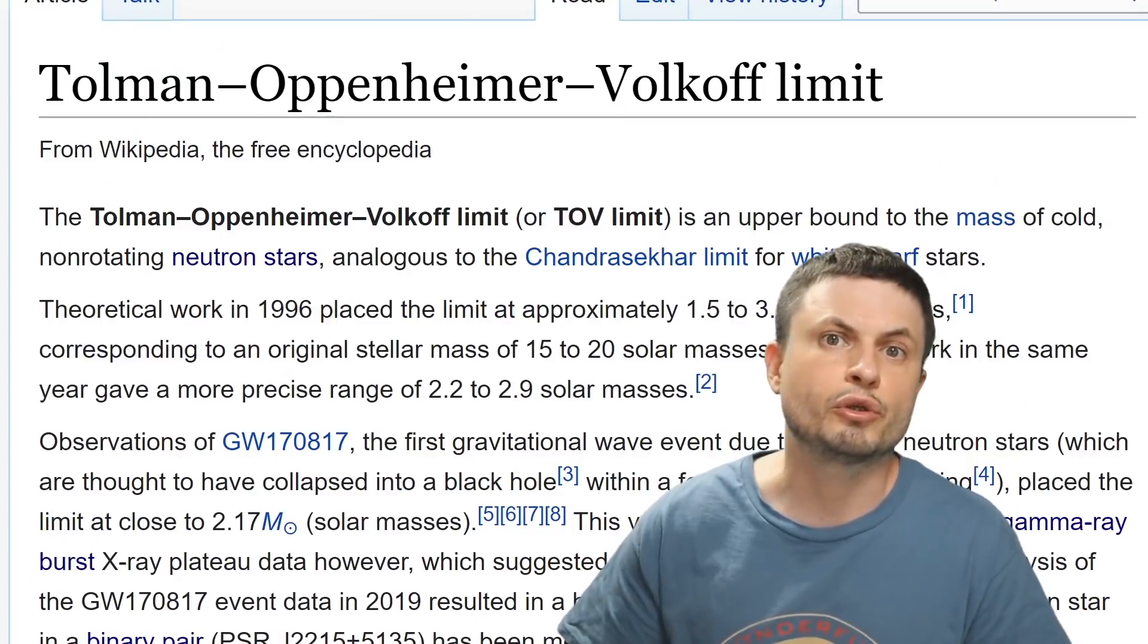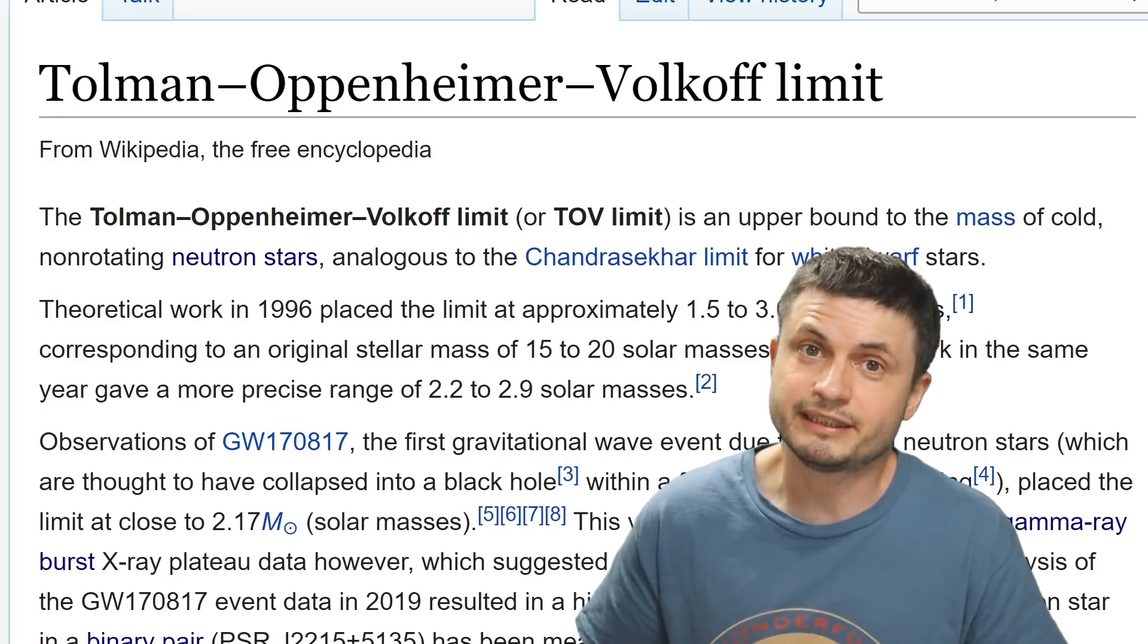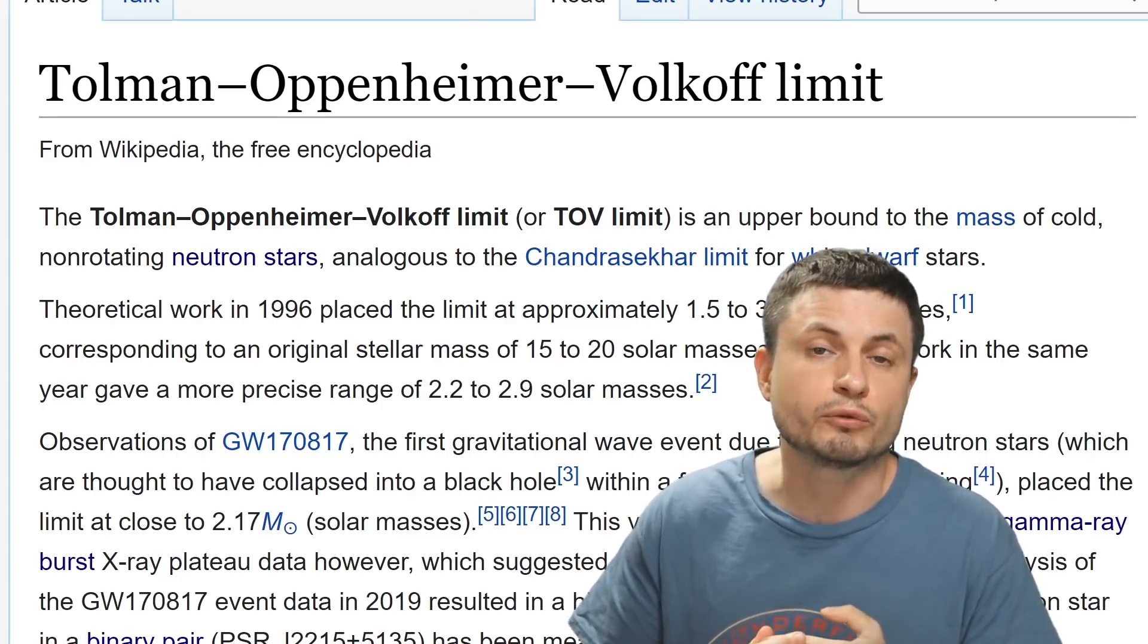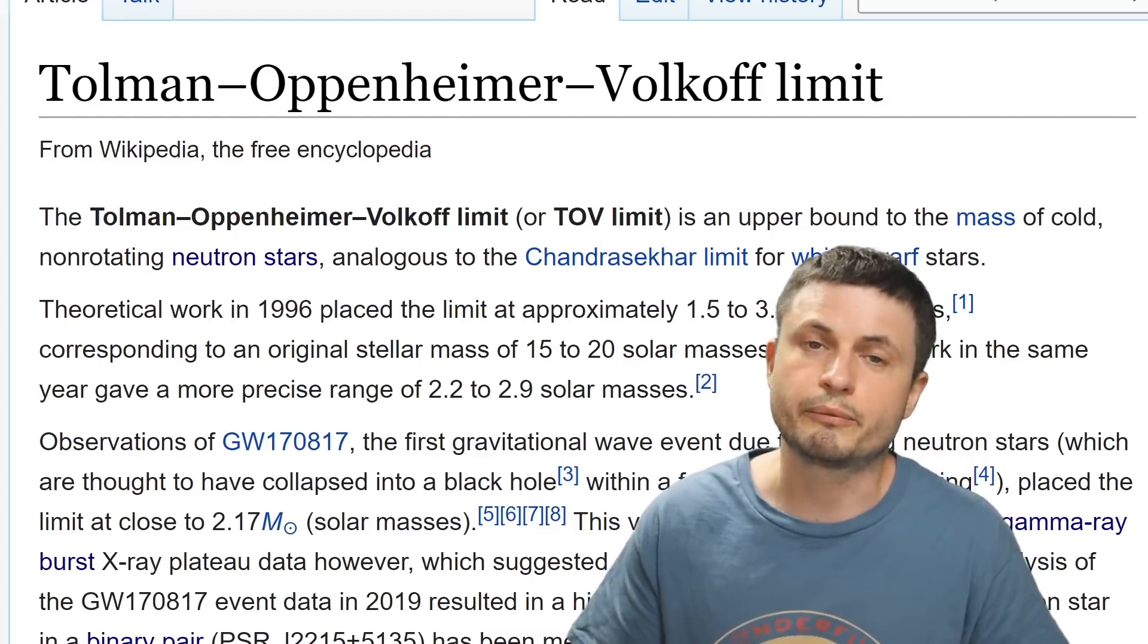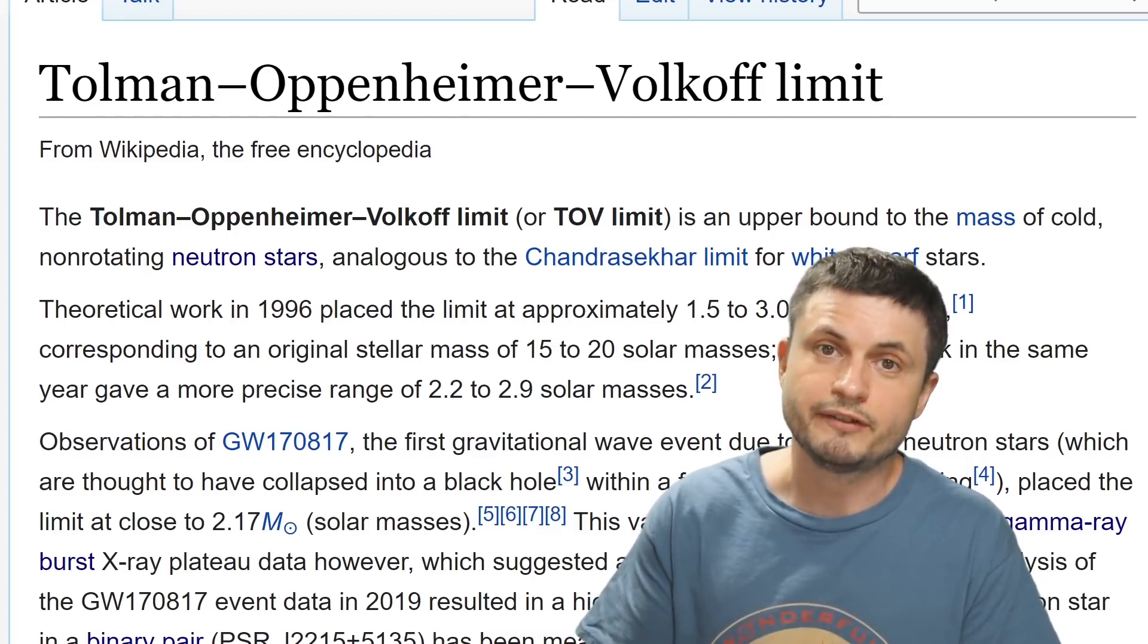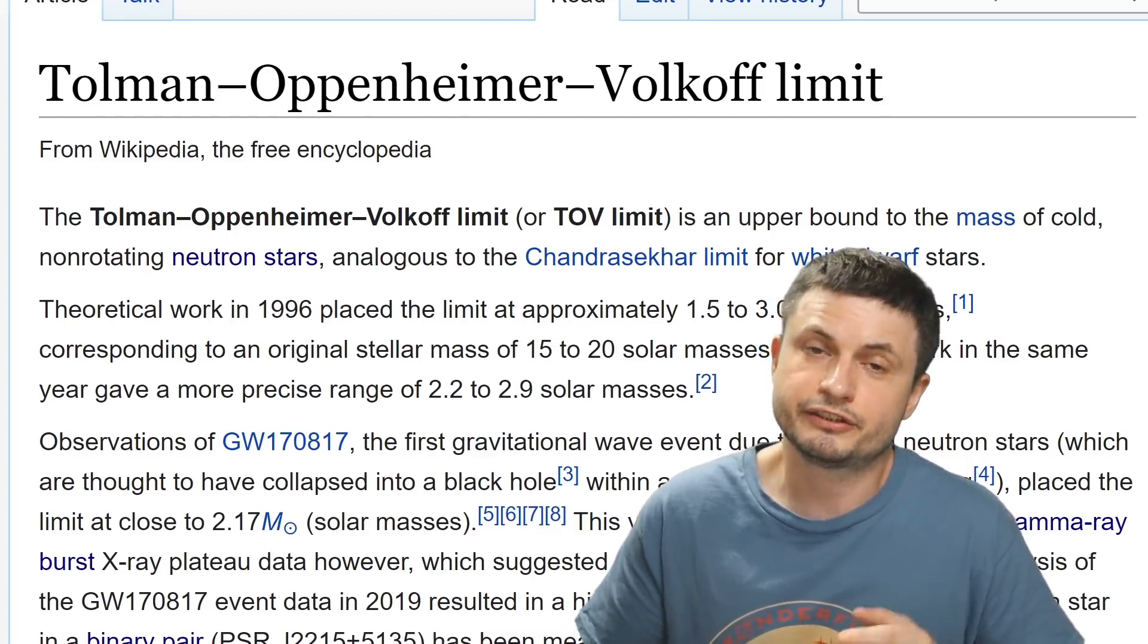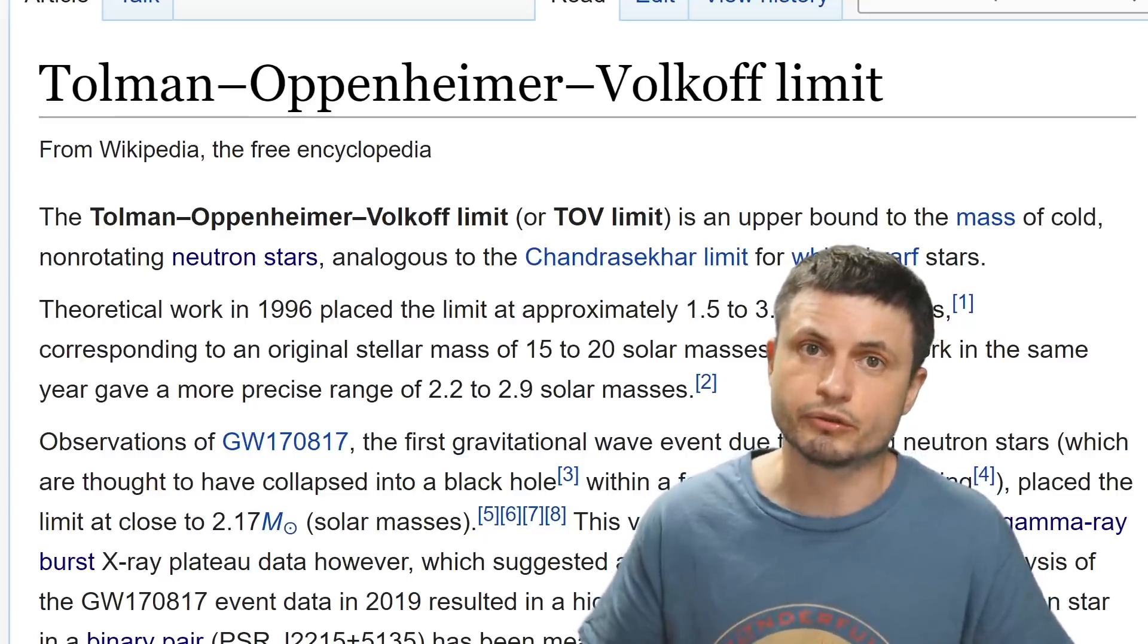This is known as the TOV limit, and mathematically at least, this limit lies, but it's believed to be no more than three masses of the sun. And so if a neutron star reaches this mass, it essentially explodes creating a black hole. Which is pretty much exactly what happened.